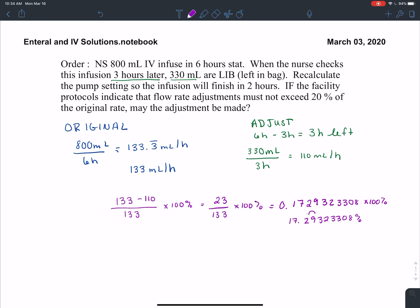I'm going to round my percent to the nearest tenth, which tells me that I have a 17.3 percent decrease. I know it's a decrease because the flow rate is going down. If I look, it cannot exceed 20 percent. 17.3 percent is below that 20 percent. So we can say yes, the adjustment can be made.